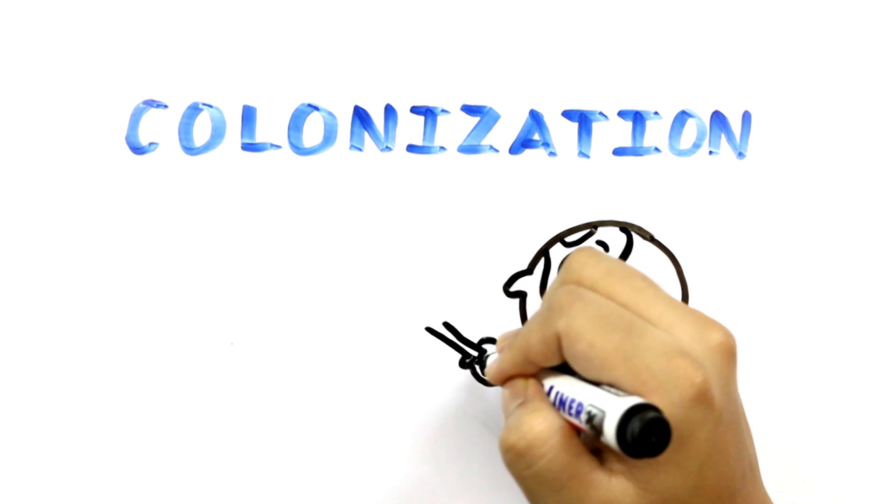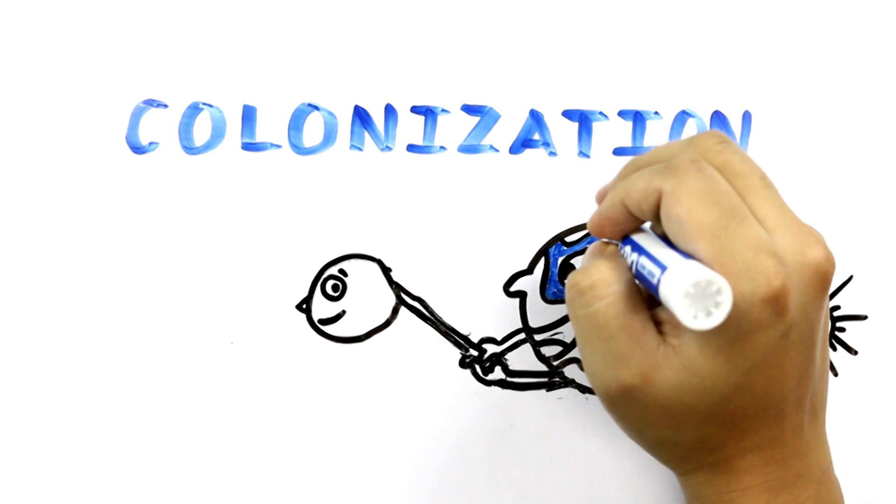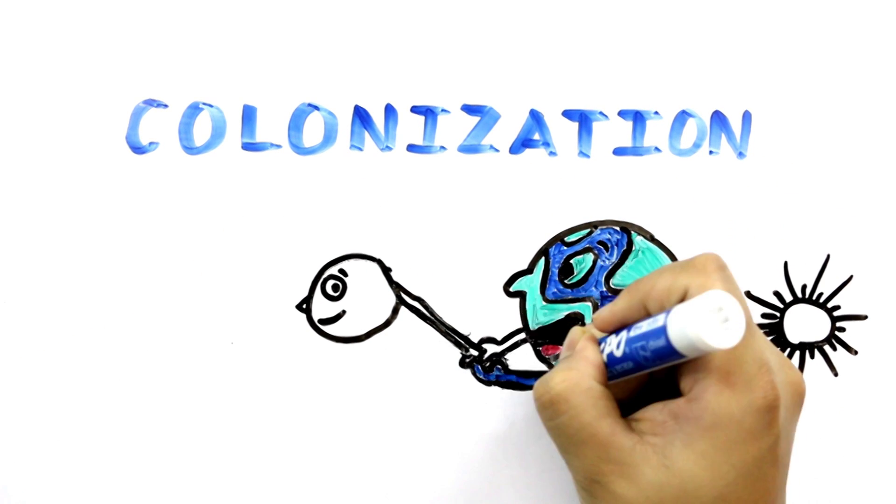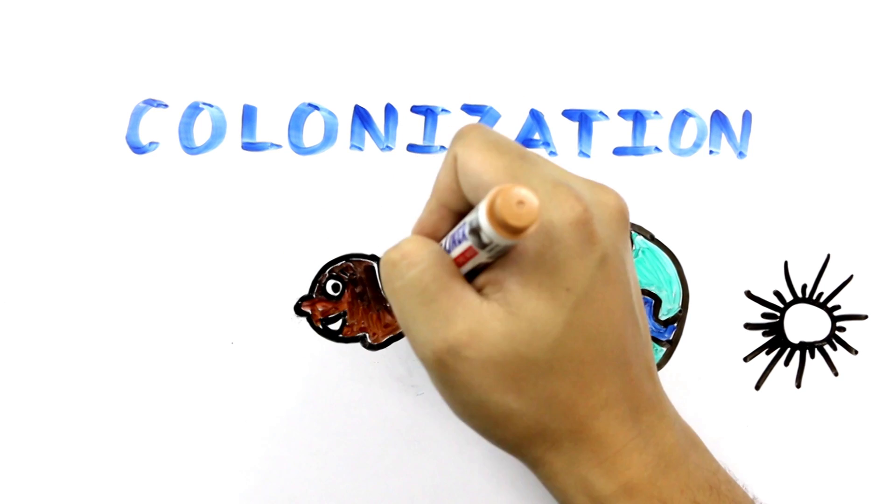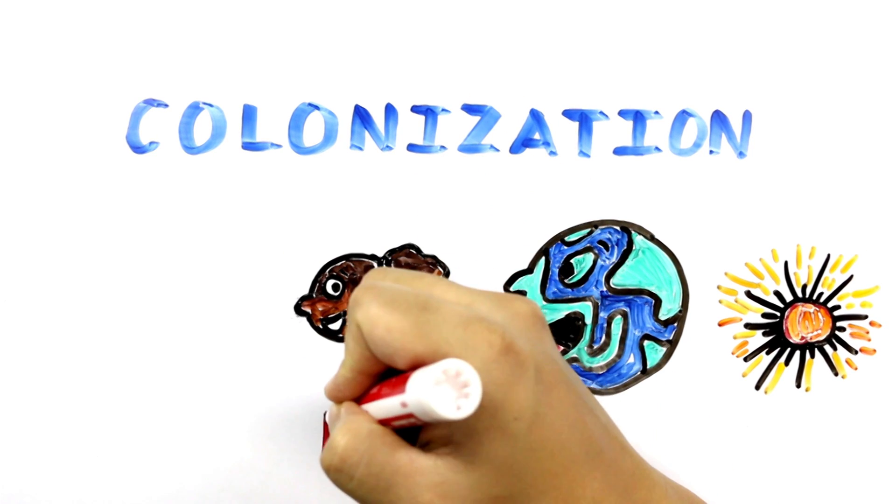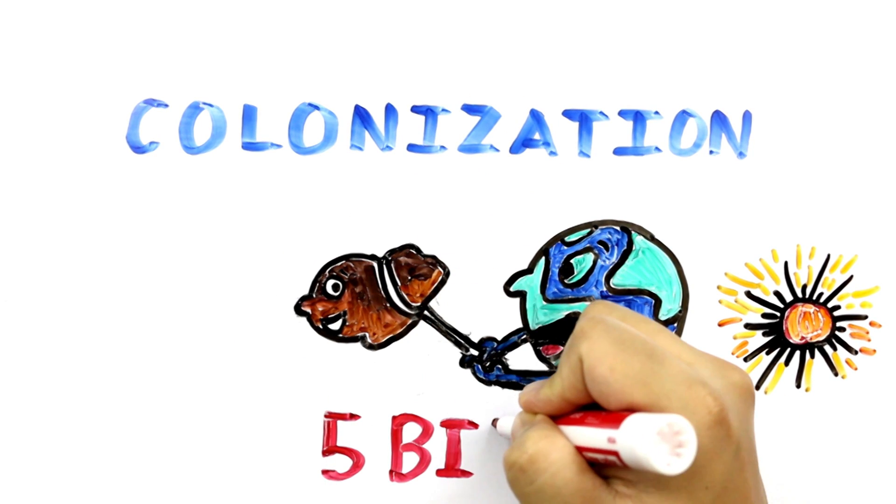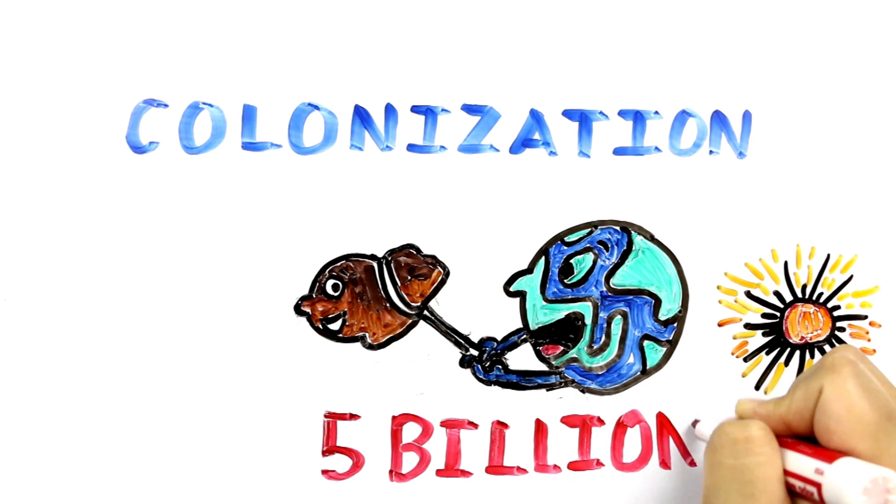Scientists propose capturing a passing asteroid and using its gravitational effect to nudge Earth's orbit outward. A continuous asteroid passage every 6,000 years or so could keep Earth at a comfortable distance and give life another 5 billion years on the planet.